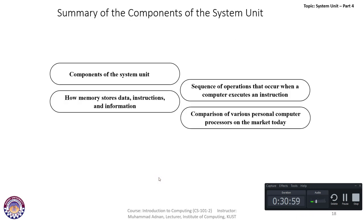If you also have a good GPU graphics card that will be an additional advantage. In summary, buy a laptop with 8 gigabytes of RAM, a large screen of minimum 15.6 inches, an SSD hard drive of at least 500 gigabytes, and a Core i7 9th or 10th generation processor. We have completely discussed the system unit in detail — different components, how memory stores data instructions and information, the sequence of operations when a computer executes an instruction, and comparisons of various personal computer processors on the market today.